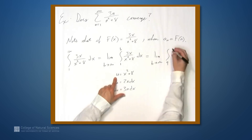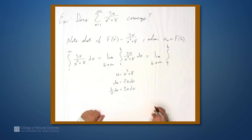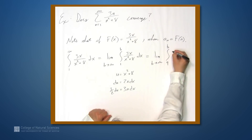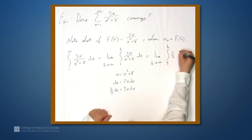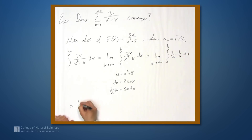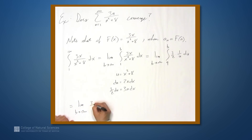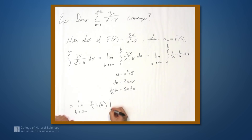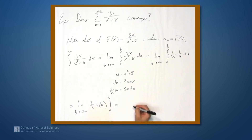After the u-substitution, this becomes the limit as b goes to infinity of the integral from 9 to b of 3 halves times 1 over u du. Taking the antiderivative, we get the limit as b goes to infinity of 3 halves times the natural log of u evaluated from 9 to b. We don't need an absolute value around u since it's positive. When we evaluate at b and send b to infinity, this goes to infinity.